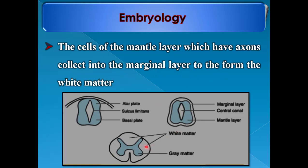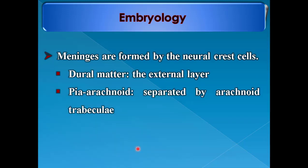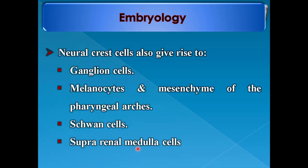Meninges are formed by the neural crest cells, in which the dura mater is the external layer and the pia-arachnoid are separated by the arachnoid trabeculae. Other derivatives of the neural crest cells are ganglion cells, melanocytes, mesenchyme of the pharyngeal arches, Schwann cells, and the suprarenal medulla cells.